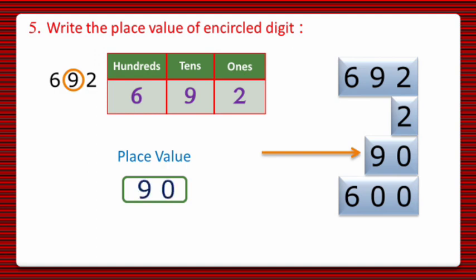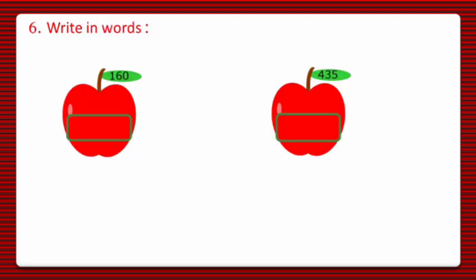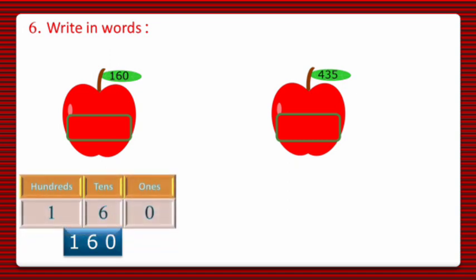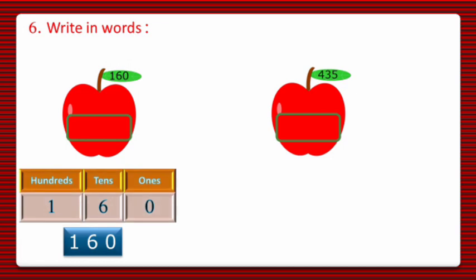Now let's move to question number 6. In question number 6, write in words. We have to write down 160 in words, for which we will take the place value chart. For 160, it's clear that zero ones are there, six tens are there, and one hundred is there.